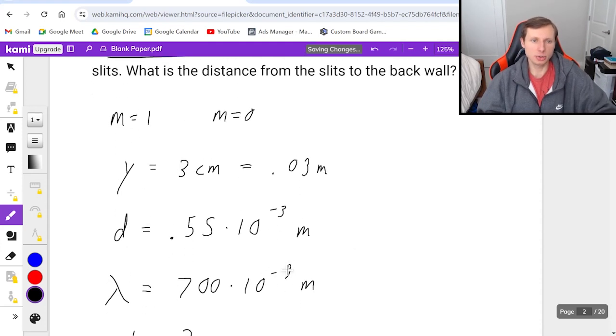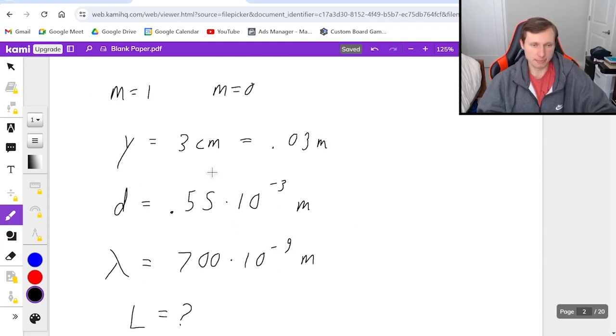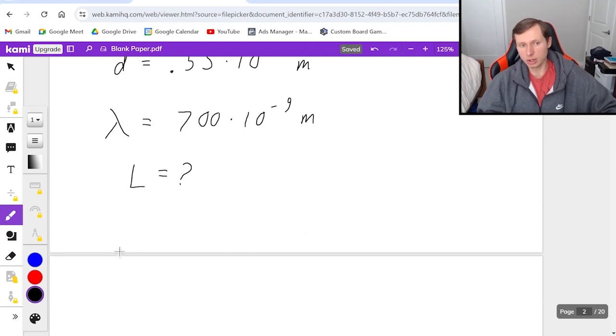Which equation should I use? I'll use y_m = mλL/d, or in this case y_1 since m = 1.